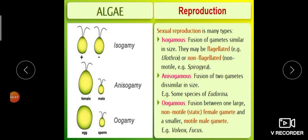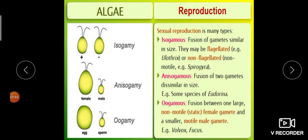Oogamous type of reproduction is the fusion between one large non-motile female gamete and a smaller motile male gamete. The female gamete is static in a place, while the male gamete has a flagellated structure so it reaches the egg and fertilization takes place. Example: Volvox and Fucus. Based on gamete structure, sexual reproduction is classified into isogamous, anisogamous, and oogamous.